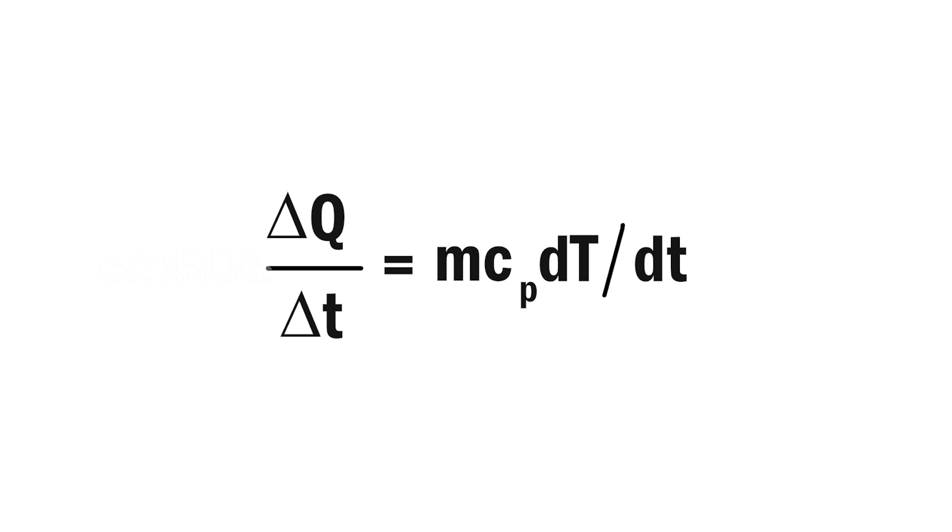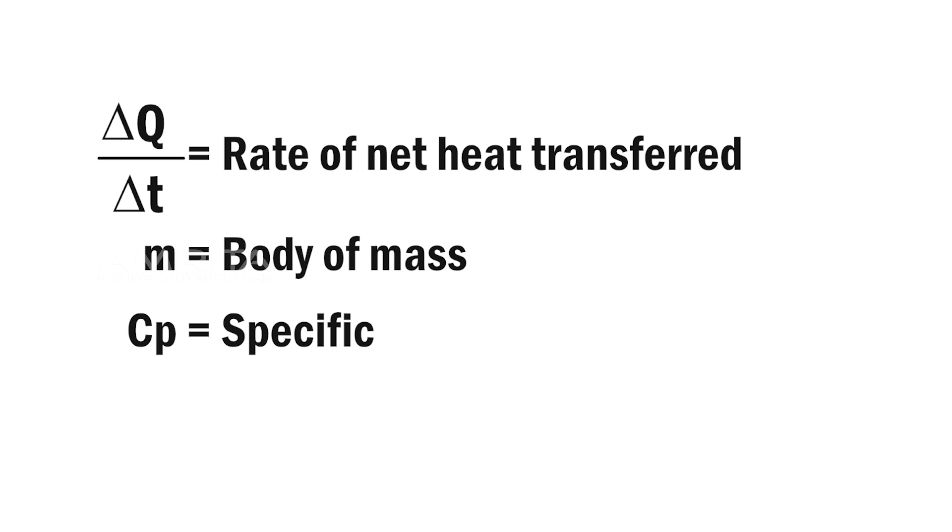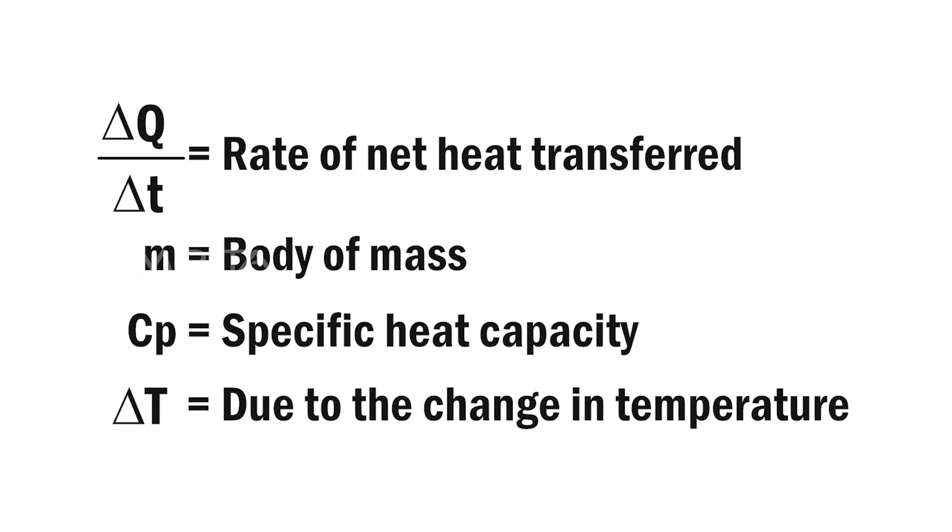Now consider another equation in thermodynamics: delta Q by delta T equals M C_P dT by dt, where delta Q by delta T is the rate of net heat transferred from a body of mass M and specific heat capacity C_P due to the change in temperature delta T. Here dT by dt represents the rate of increase of black body temperature.